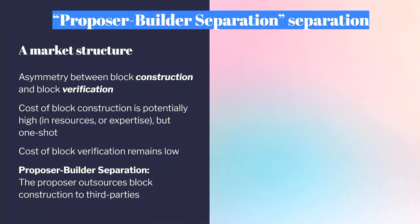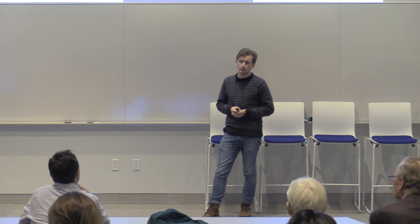Question: why wouldn't the incentives of proposer and builder be aligned, since they both want to maximize MEV? Some builders maximize MEV but still refuse to include certain transactions — which we see today. Some builders are very efficient with great value in their blocks but refuse to include some transactions, for instance from sanctioned addresses. If you're a registered builder with a legal entity in the world, you're attackable. So there's a trade-off between censorship resistance and profit maximization.